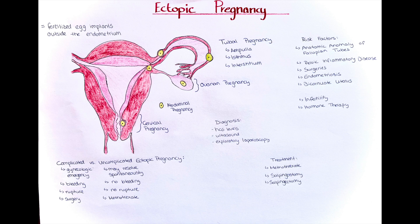An empty uterine cavity combined with a thickened endometrial lining indicates an ectopic pregnancy. On ultrasound, we can see the tubal ring sign — also called the blob sign — which is an echogenic ring surrounding an unruptured ectopic pregnancy, specific to the fallopian tube. In an interstitial ectopic pregnancy, we may see the interstitial line sign, appearing as an echogenic line extending from the gestational sac into the upper uterus.